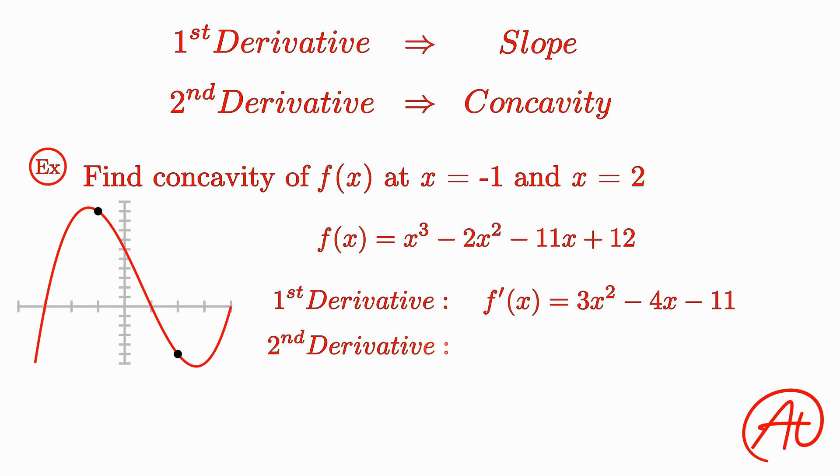Now to find the second derivative, all we have to do is take the derivative of this first derivative. As a result, we get that the second derivative is 6x minus 4. Now we have an equation that we can use to find the concavity of the curve at any point.